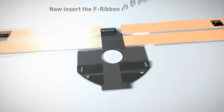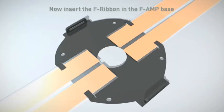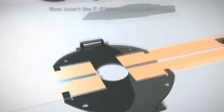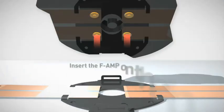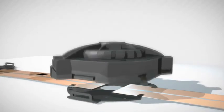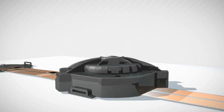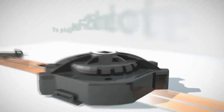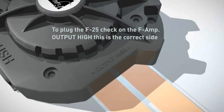Insert the two separate F-ribbon parts in the F-Amp bass. Take the F-Amp. Check that output high and output low are aligned with the F-ribbon. Insert the F-Amp on the bass rigid fin and press push until you hear a click. The connection with fast lock is very easy.